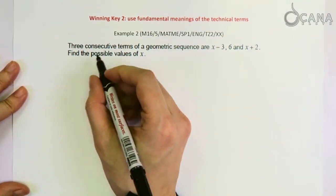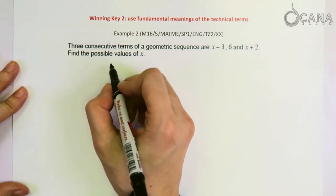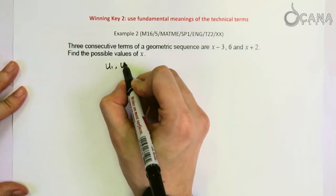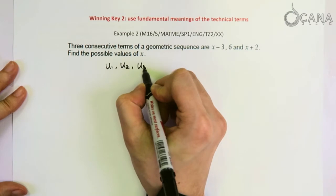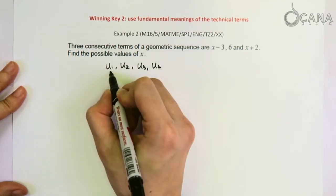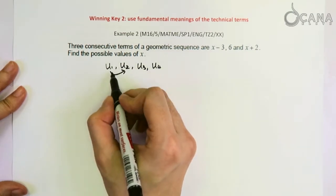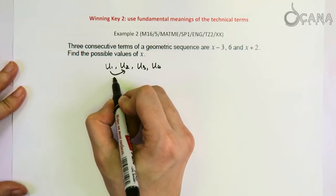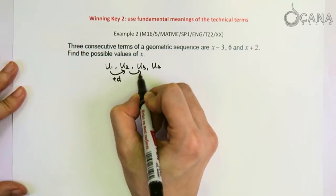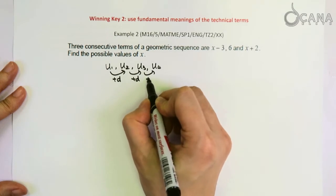For example, we already know that in an arithmetic sequence, you get the next term by adding a common difference to the previous term, right? So here if this is an arithmetic sequence, then U1 plus D to get the second term and then plus D to get the third term, etc.